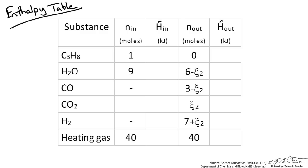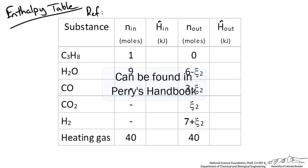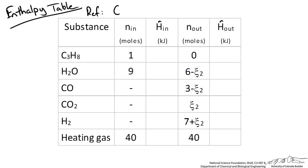To determine specific enthalpies we first choose appropriate references. We use the heat of formation method and add the sensible heat change from the reference state. For common species like carbon monoxide, carbon dioxide, hydrogen, and water, we can look up values in tables. Our reference state is standard elements — carbon in solid state, hydrogen gas, and oxygen gas — at 25 degrees Celsius and 1 atmosphere.